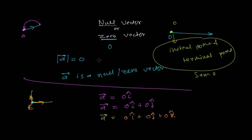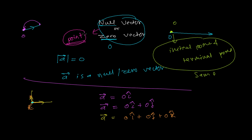So a null vector or zero vector, geometrically speaking, is just the vector of a point — it just represents a point. If you're not moving any distance in any direction, you're just at a particular point, fixed at that location. That's the geometric meaning of the null or zero vector.